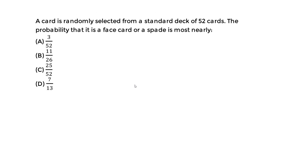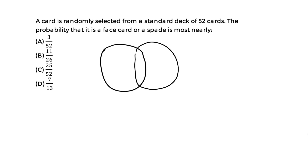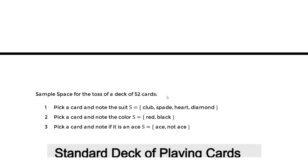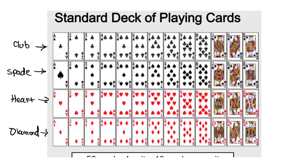Because it's non-mutually exclusive, we draw two circles that cross each other — they're not disjoint anymore. Event A is the face card event, event B is the spade event. To find the probability of each, we focus on them separately — do not combine the two yet.